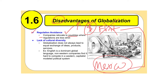Lastly, globalization actually leads to a lack of cultural diversity. English is a dominant global language. Non-Western countries find it hard to compete in the Western capitalist model political system. Countries in the East where capitalism isn't the norm find it more difficult to get into a global system that's dominated by a Western idea of capitalism.